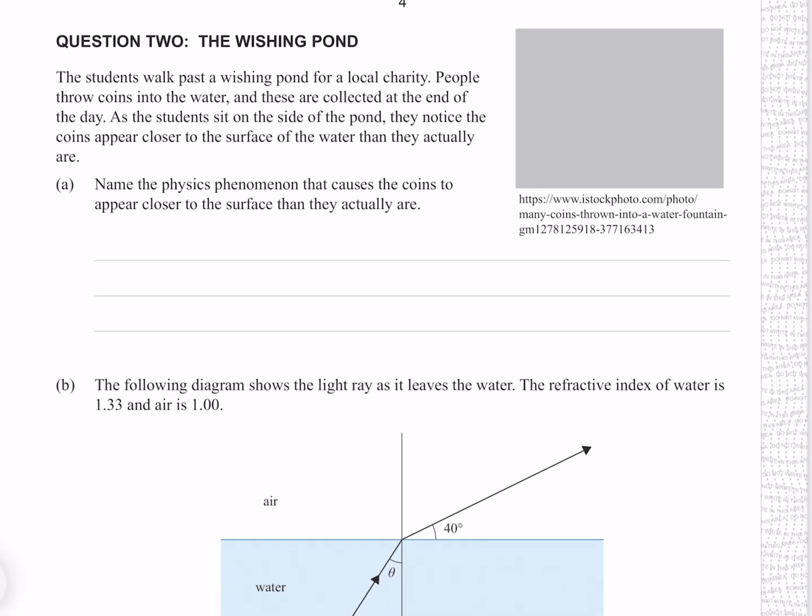Question 2. The students walk past a wishing pond for a local charity. People throw coins in the water and these are collected at the end of the day. As the students sit on the side of the pond, they notice the coins appear closer to the surface of the water than they actually are. Name the physics phenomenon that causes the coins to appear closer to the surface than they actually are. This is refraction.